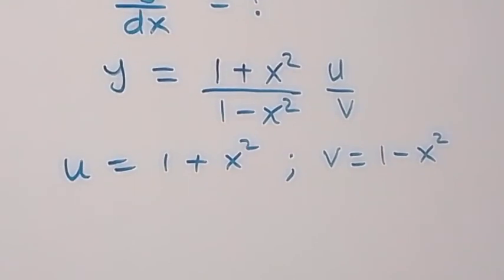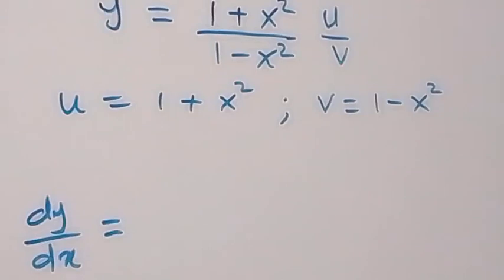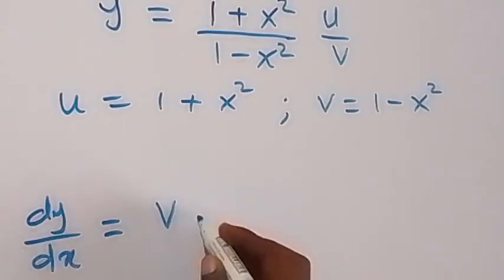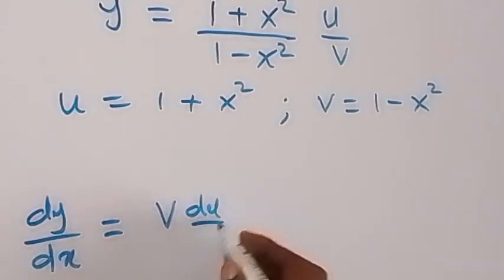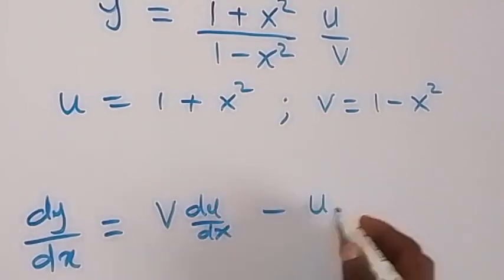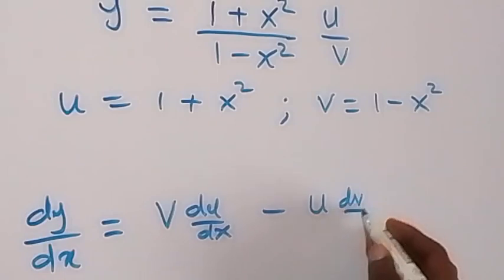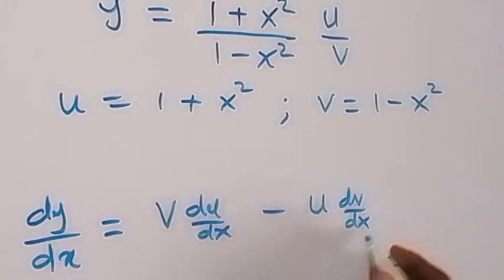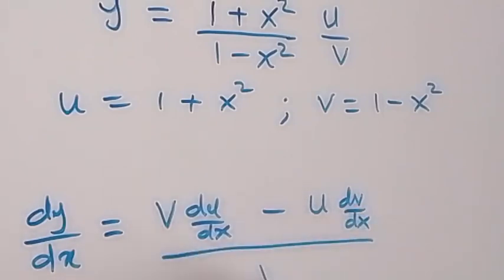Applying the quotient formula, dy/dx equals v times du/dx minus u times dv/dx, all over v squared. This formula is applicable here.